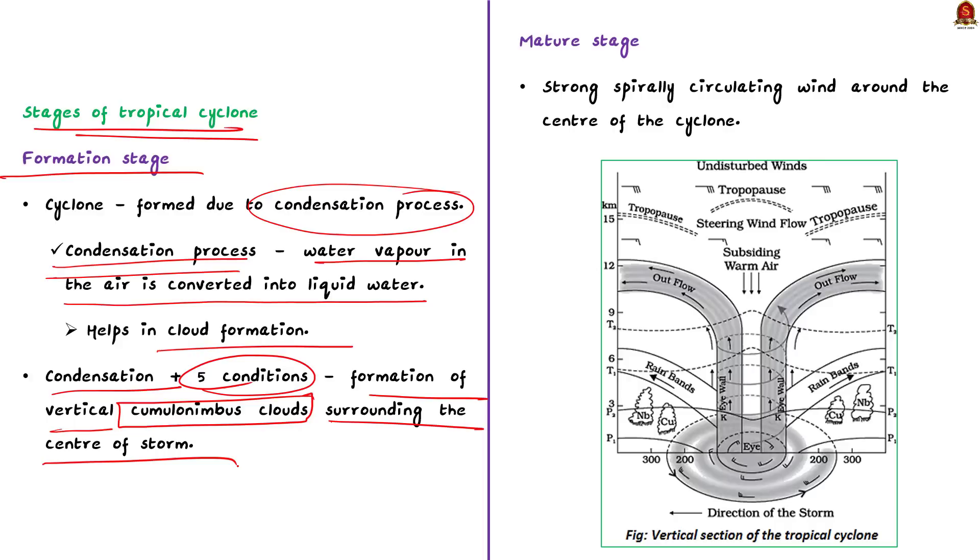Now, comes the mature stage. A mature tropical cyclone is characterised by the strong spirally circulating wind around the centre of the cyclone. Know that the centre of the cyclone is called as the eye. See, the eye is the region of calm with subsiding air. Around the eye region, there is the eye wall. In the region of the eye wall, there is a strong spiralling ascent of air to a greater height which can reach up to the tropopause. The wind reaches maximum velocity in the eye wall region reaching as high as 250 km per hour. Then, from the eye wall, the rain bands will radiate and clouds may drift into the outer region. This makes the cyclone even stronger. This is what happens in the mature stage.